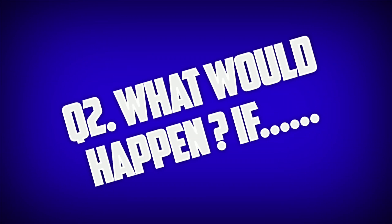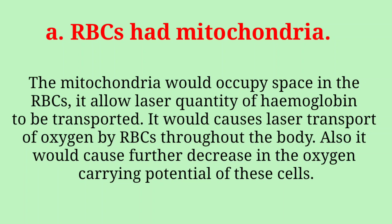Question 2: What would happen if RBCs had mitochondria? The mitochondria would occupy space in the RBCs, allowing a lesser quantity of hemoglobin to be transported. It would cause lesser transport of oxygen by RBCs throughout the body, also causing a further decrease in the oxygen-carrying potential of these cells.